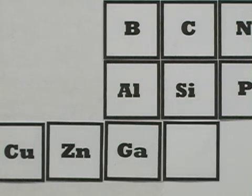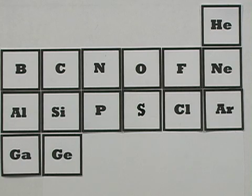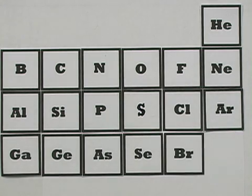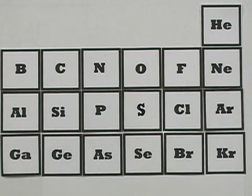When Mendeleev made his table, this element hadn't been discovered yet. So, Mendeleev actually left a space for an as-yet undiscovered element he predicted would have a mass heavier than gallium and with chemistry similar to silicon. It was discovered two decades later. Scientists named it germanium. Next comes arsenic, selenium, bromine, and krypton, which is inert, like argon.